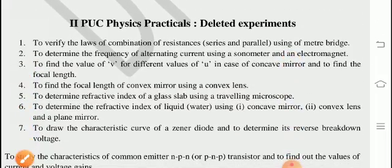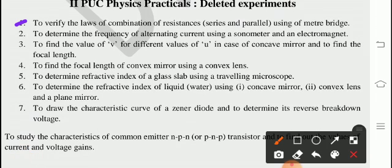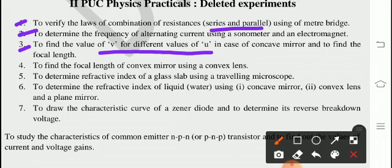So, in experiments, deleted experiments are seven. First one, to verify the laws of combination of resistances series and parallel using meter bridge. Second one, to determine the frequency of alternating current using a sonometer and electromagnet. Third one, to find the value of V for different values of U in case of concave mirror and to find the focal length. Fourth one, to find the focal length of convex mirror using a convex lens. Fifth one, to determine refractive index of a glass slab using a traveling microscope. Sixth one, to determine the refractive index of liquid water using first concave mirror, second concave lens and a plane mirror. Seventh one, to draw the characteristic curve of a Zener diode to determine its reverse breakdown voltage.